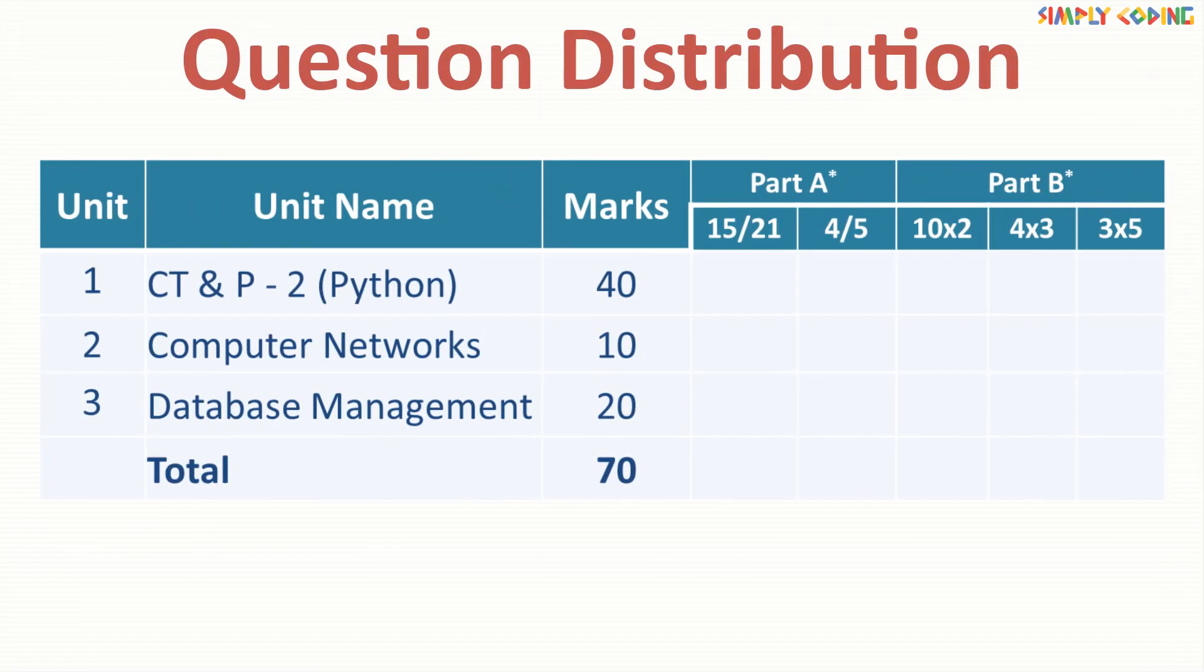Now, let's see how these questions or marks are distributed across the units. For Python programming, in part A, you can expect around 10 questions to be asked in section 1 which are 1 mark questions, 1 question in section 2 which is the case study where you will have 5 questions and you have to answer any 4. This could be to complete a program kind of question. In part B which is descriptive answer question, you can expect 5 questions of 2 marks, 3 questions of 3 marks and 1 question of 5 marks in each of these sections. While it is said descriptive, in Python expect most of the questions to be writing a program.